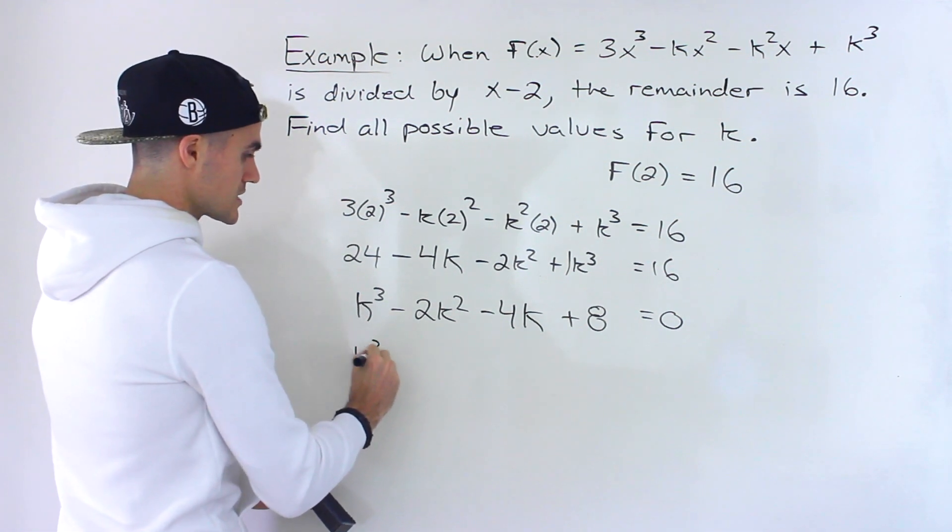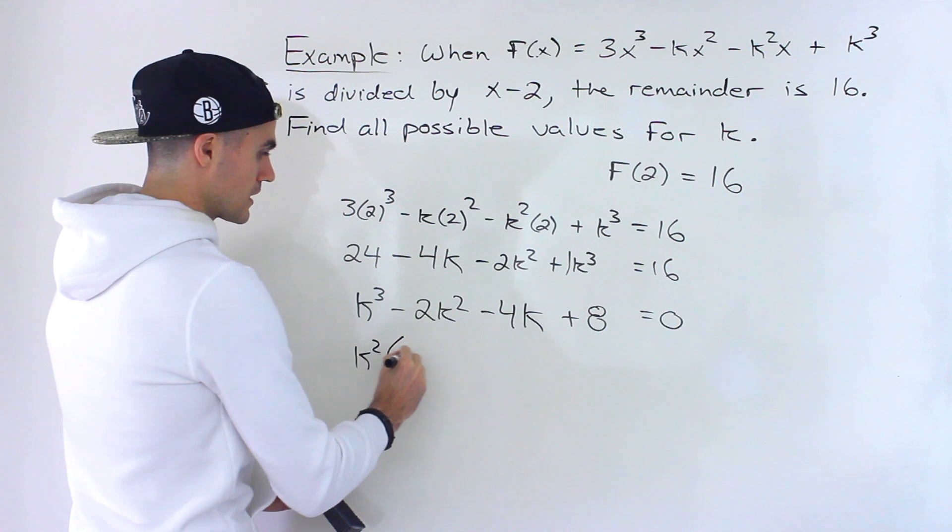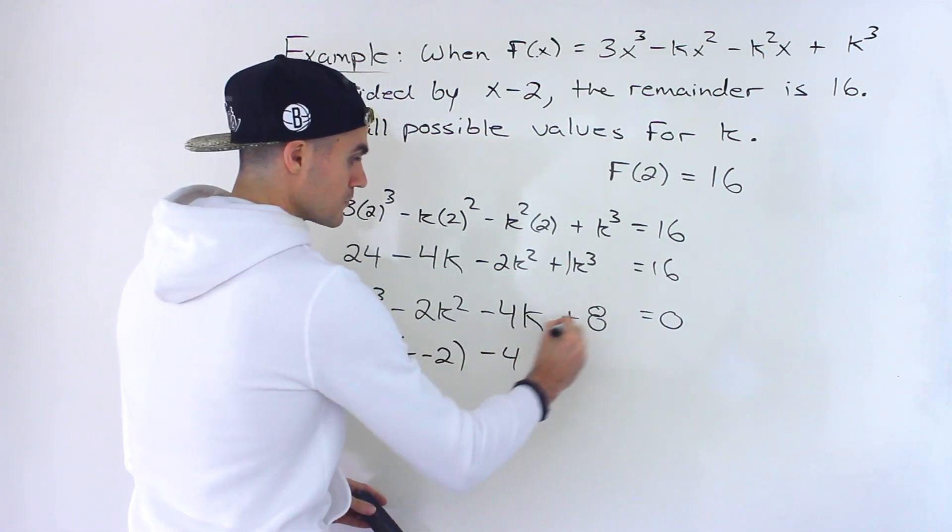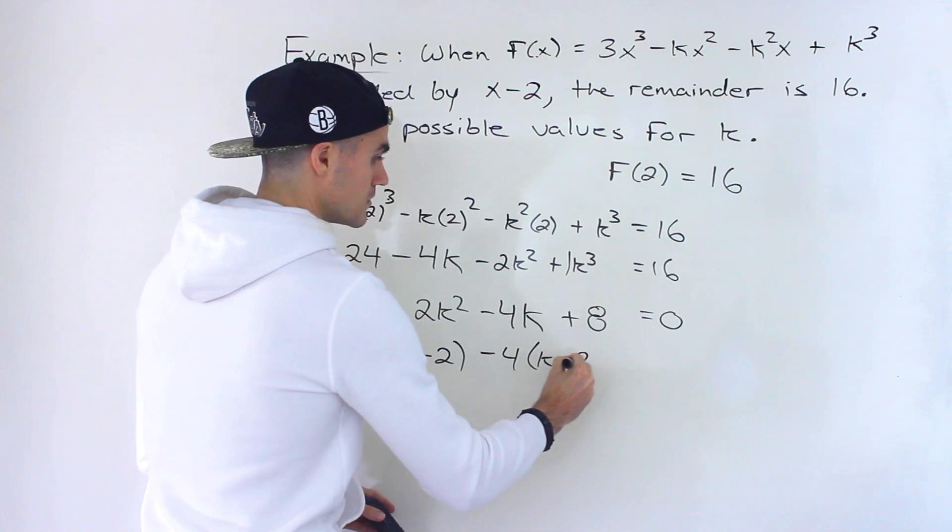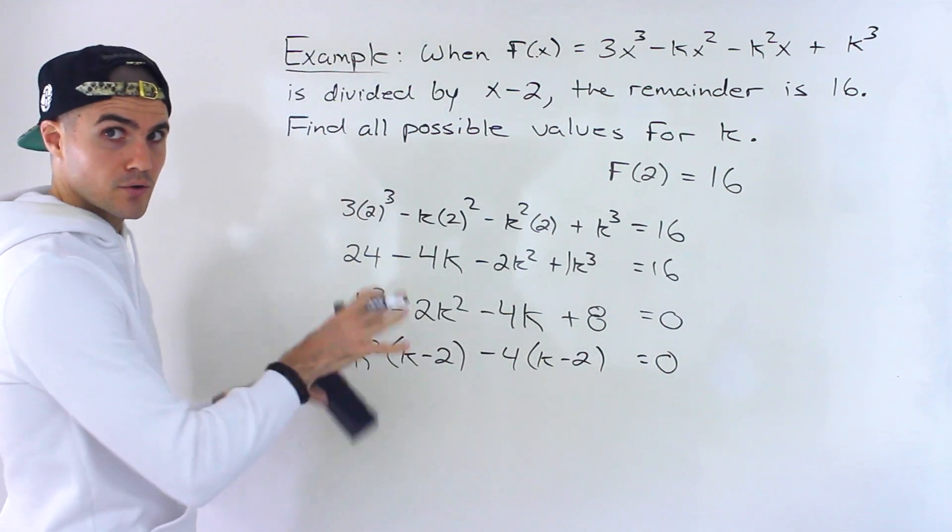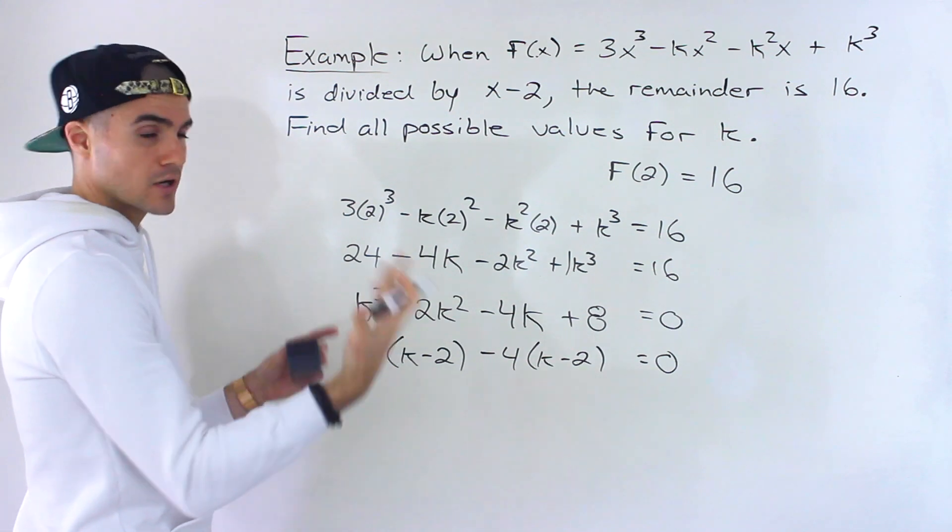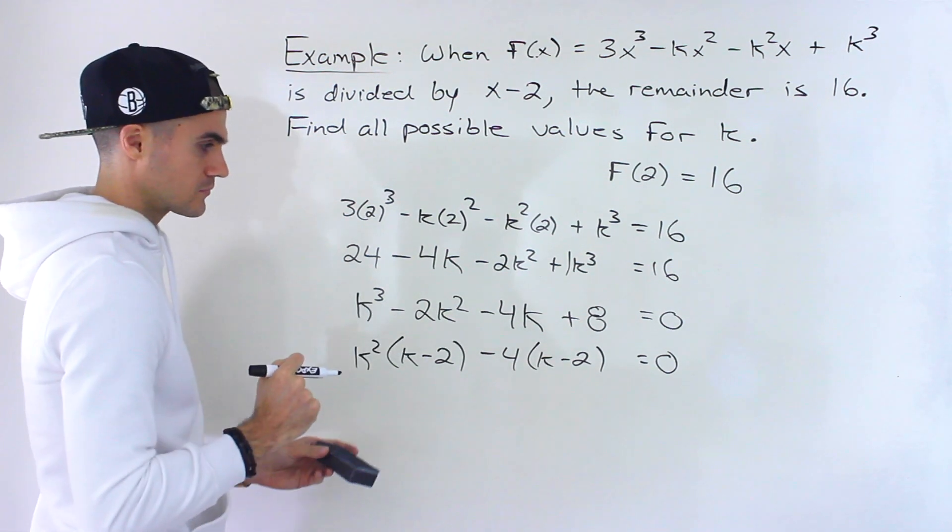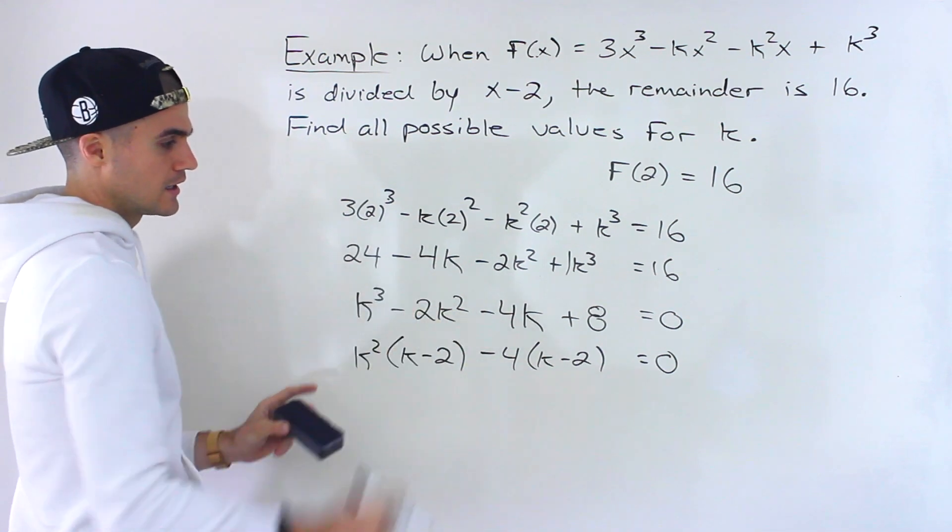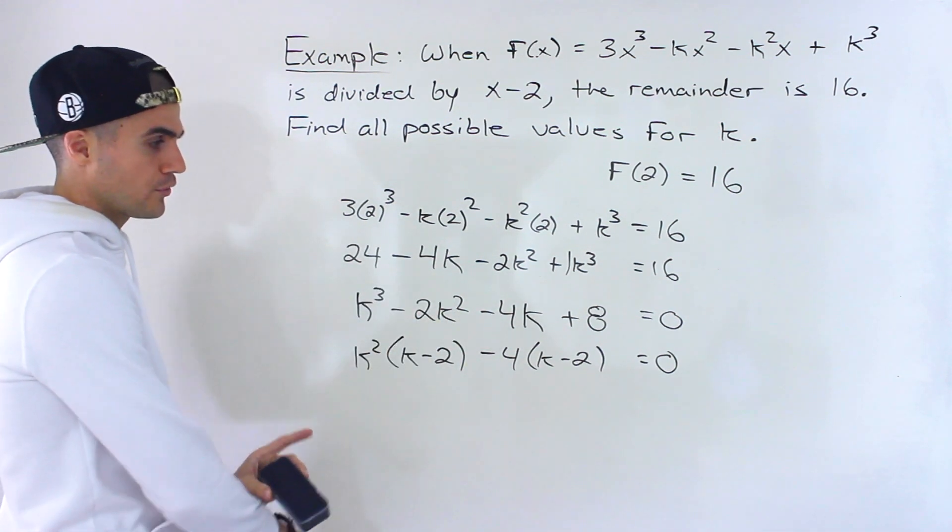In this case, we can take out k² from the first two terms, giving us k - 2. Then take out -4 from the last two terms, also giving us k - 2. That's not always going to happen—sometimes you'll have to use the factor theorem, which takes more work. But here, grouping works.